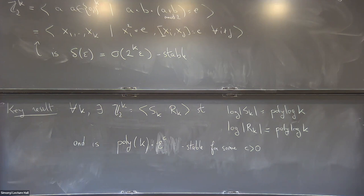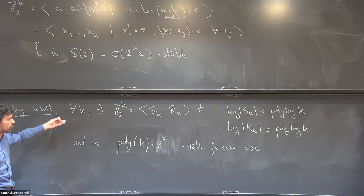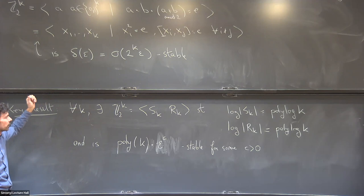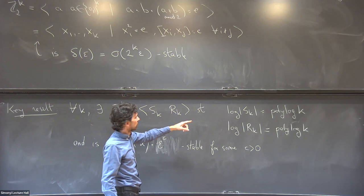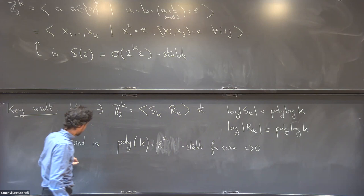I want to convince you this is non-trivial. If we started with an epsilon-homomorphism of this presentation and tried to show it's delta-close to an actual homomorphism using the naive strategy — extend to the whole group and apply the theorem — the number of generators is 2^(polylog K) while the group has 2^K elements. To reach all elements by products of generators would require sequences of length roughly K over log K. This blows up the error by that factor, giving polynomial dependence in K rather than what we have.